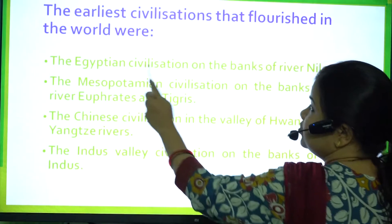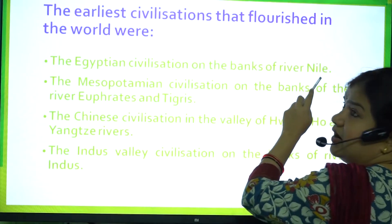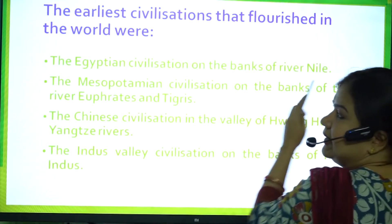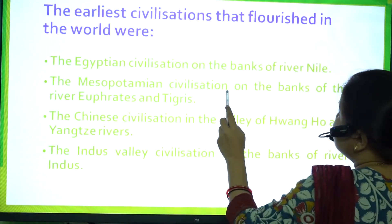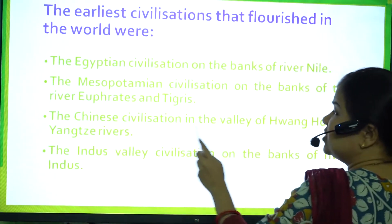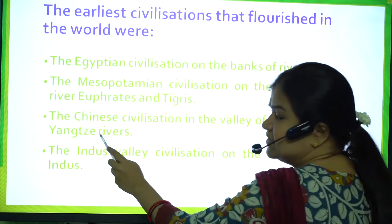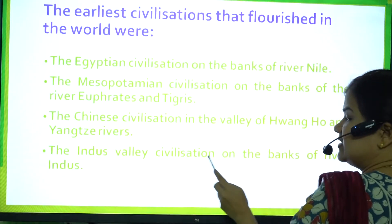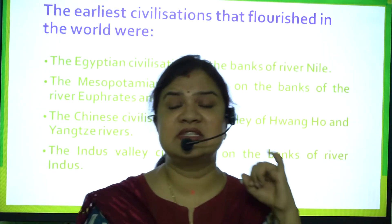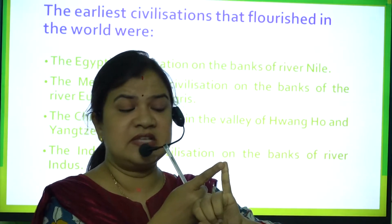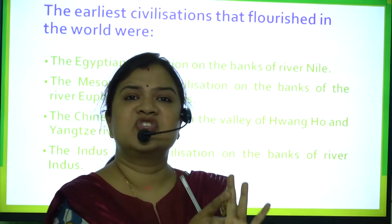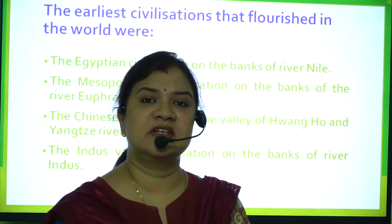The earliest civilizations were: the Egyptian civilization on the banks of the river Nile; the Mesopotamian civilization on the banks of the rivers Euphrates and Tigris; the Chinese civilization in the valley of the Huango and Yansi rivers; and the Indus Valley Civilization on the banks of the river Indus.